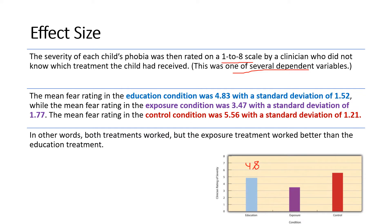The second condition is the exposure condition, and the third is the control condition. The exposure condition has a mean fear score of 3.47, making it the technique considered the best. In the control condition, the scores are the highest, meaning the highest level of fear toward the particular object — especially dogs.